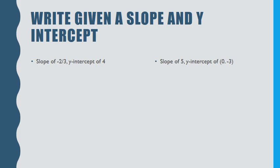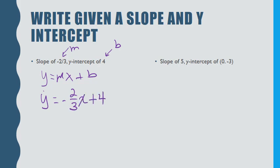If you're given a slope and a y-intercept, just substitute into y equals mx plus b — m is the slope and b is the y-intercept. For example, slope of negative two-thirds and y-intercept of four gives y equals negative two-thirds x plus four. Another example: slope of five and y-intercept of negative three gives y equals five x minus three.